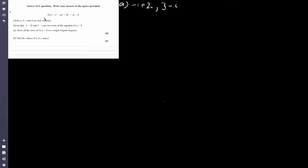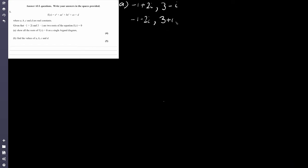Remember, if you've got a root of an equation, the complex conjugate is also a root of that equation. So the complex conjugate of minus 1 plus 2i will simply be minus 1 minus 2i. And then finally, the complex conjugate of 3 minus i will be 3 plus i. So we've got our four roots.